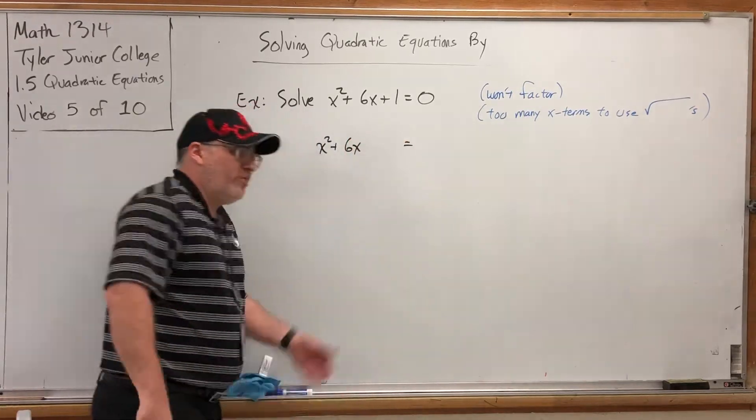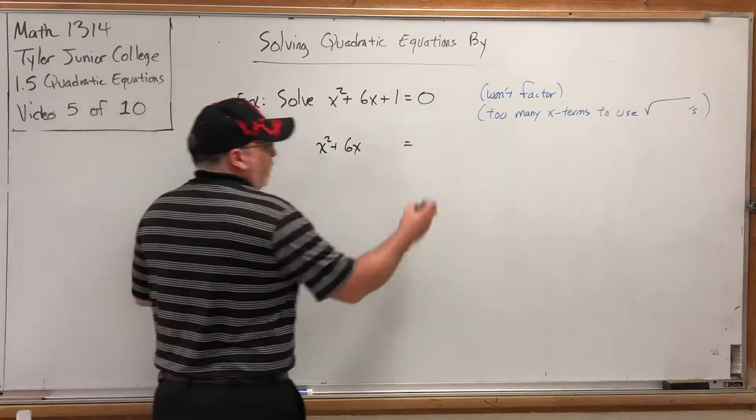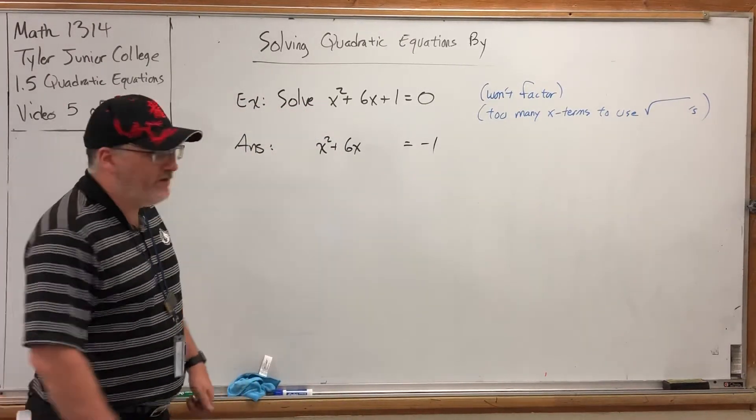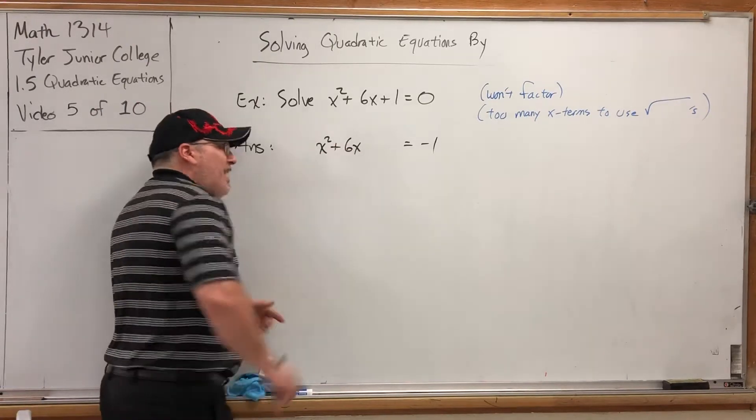This will transform into a how-to list. Let's move the 1 over by subtracting it from both sides. And we get x squared plus 6x equals negative 1. And if you'll notice, I left a gap where the 1 used to be.